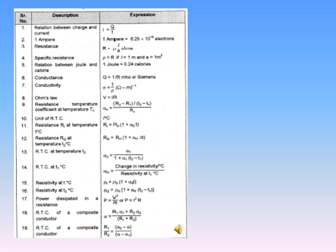After that, we have the formula for a composite conductor. A composite conductor is made up of two different materials connected together. The first material has resistance R1 and RTC alpha1, and the second material has resistance R2 and RTC alpha2. The RTC of a composite conductor is equal to (R1 × alpha1 + R2 × alpha2) / (R1 + R2). You can use this formula whenever a numerical comes on a composite conductor.